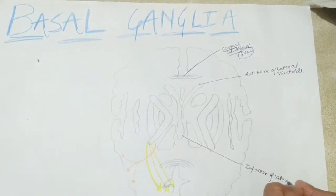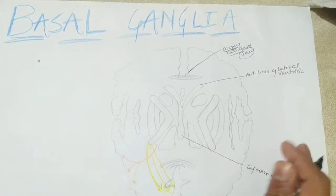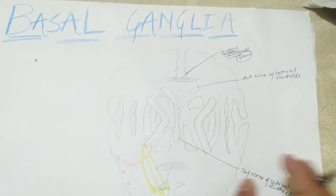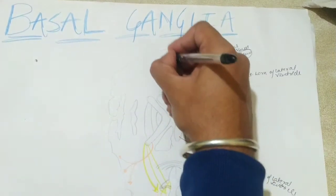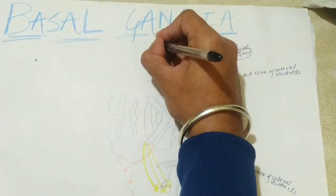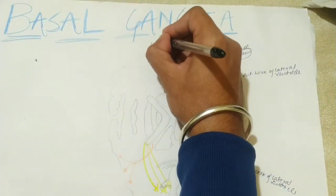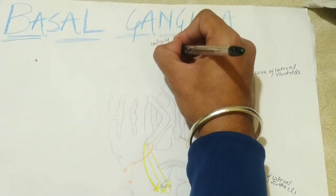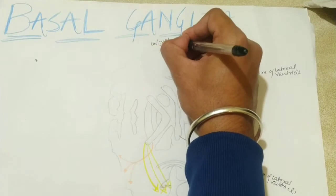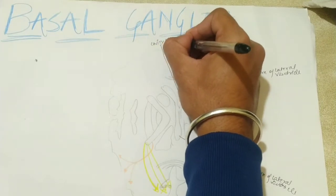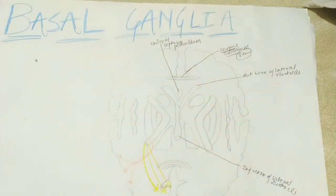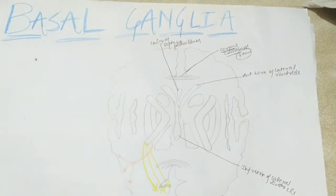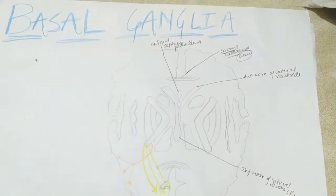I'm showing the basic labeling of this basal ganglia. This here is your cavity of septum pellucidum. Just remember these names and the labelings — these structures are not so much important. Just know the labeling in the horizontal section.